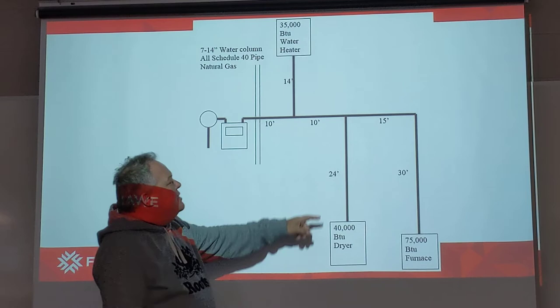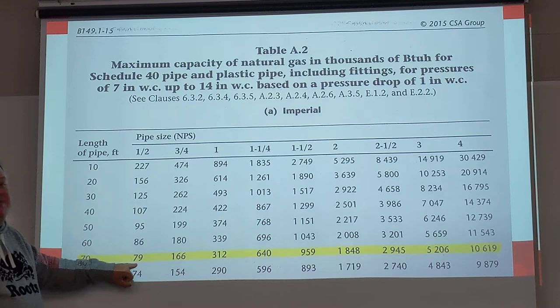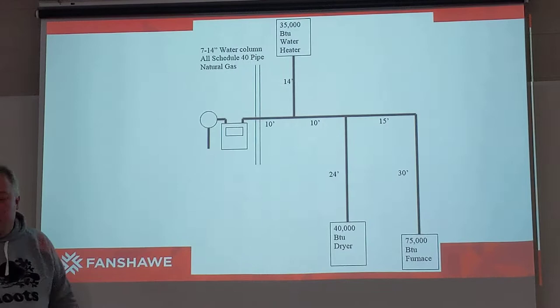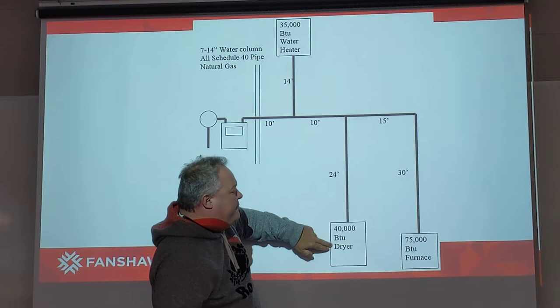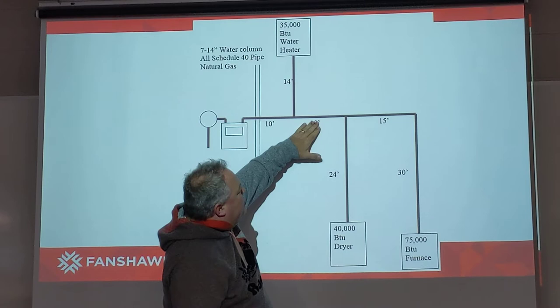The next thing we're going to do is size the line down to the 40,000 BTU gas dryer. Same type of application — we're still going to use the 70-foot code zone. Because the BTU load to that appliance is only 40,000 BTU, that line will be half-inch as well. With a capacity of 79,000, a half-inch line appropriately serves that 40,000 BTU dryer. So we've got half-inch coming up here, half-inch across, and half-inch coming up to the dryer. Now this 10-footer has to serve both the 40,000 and 75,000 BTU equipment.